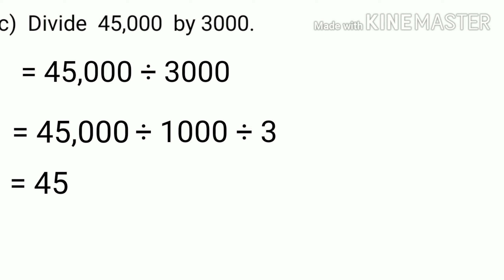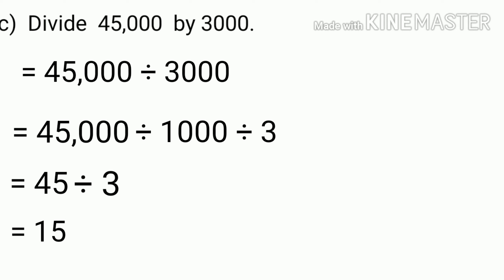Now, we can divide 45 by 3. 45 divided by 3 is 15. So, 45,000 divided by 3,000 is 15.